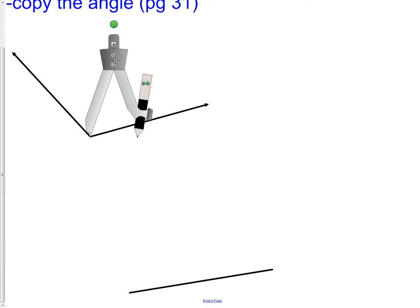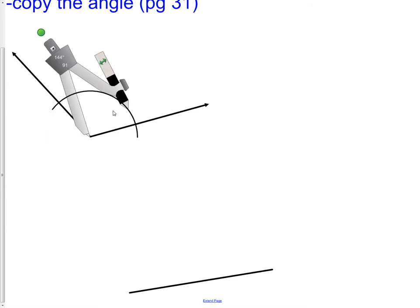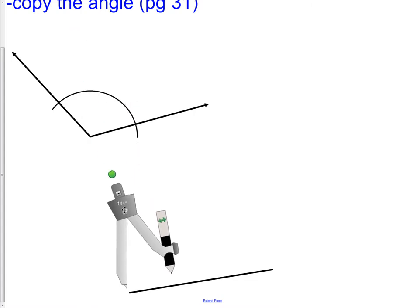First step, put your compass point on the angle that you're copying and draw an arc that crosses both of the sides. Now without changing the settings on your compass, move the compass point from the vertex of that angle down to the vertex of the next angle that you're going to be creating.